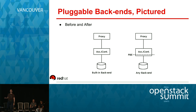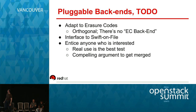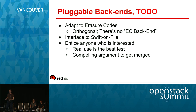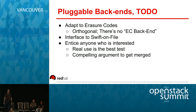There are still a number of things that need to be done. In particular, Swift on File is a version behind pluggable backends because it uses the same class that PBE changes — that's probably the biggest outstanding task.